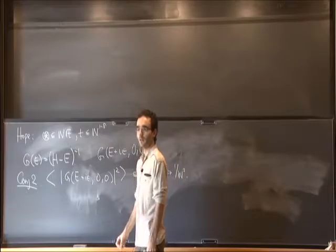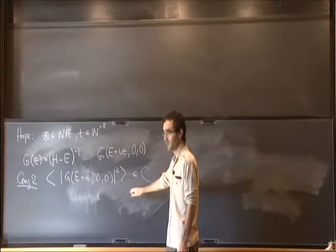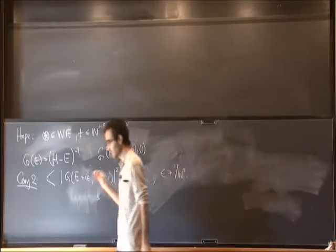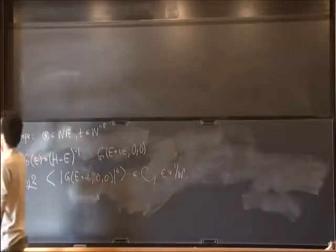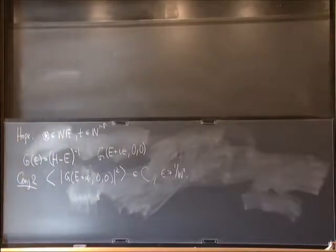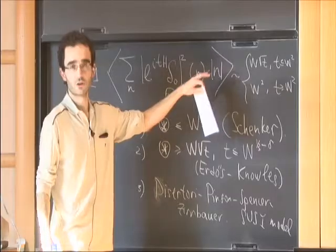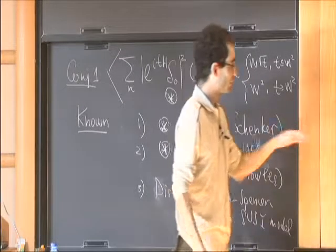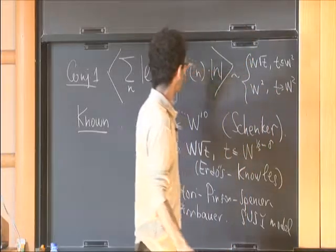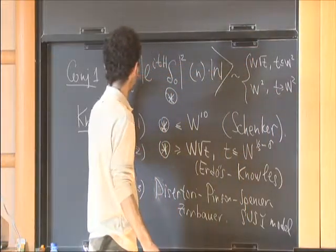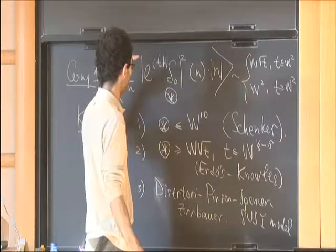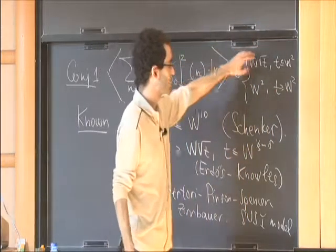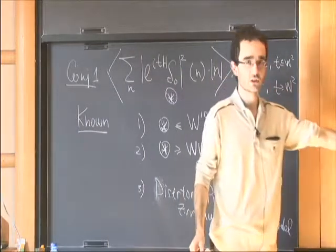The conjecture is that when you average with epsilon of order 1 over W squared, it already looks absolutely continuous. Specifically, the average of the squared absolute value of the Green function G(E plus i epsilon, 0, 0) is less or equal to a constant for epsilon greater or equal to 1 over W squared. Intuitively this conjecture is more or less equivalent to the first half of the dynamical conjecture; formally one implies the other with some uniformity issues.